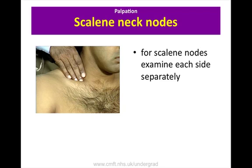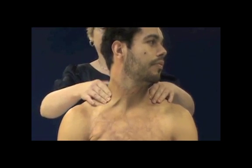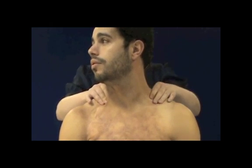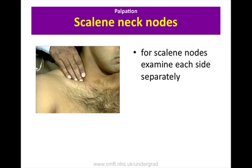Then feel for the scalene nodes above the first rib next to the insertion of the scalenus anterior muscle, with the patient's head slightly tilted to that side. Place your index finger between the clavicle and sternocleidomastoid muscle and then press down gently towards the first rib. A palpable scalene node is a soft mobile mass just above the hard first rib. Note the size and consistency of any palpable nodes and whether they are fixed to surrounding structures.